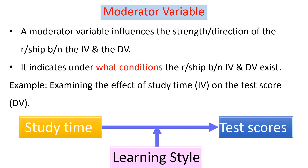The fourth type of research variable is the moderator variable. A moderator variable influences the strength or direction of the relationship between the independent variable and the dependent variable. The moderator effect is an interaction effect between the moderator and the independent variable. It indicates under what conditions the relationship between the independent and dependent variable exists. For example, when examining the effect of study time on test scores, learning style can be a moderator that either strengthens or weakens that relationship.